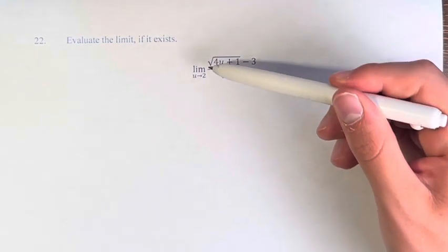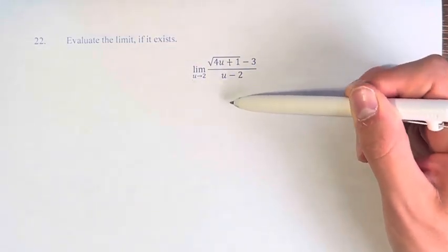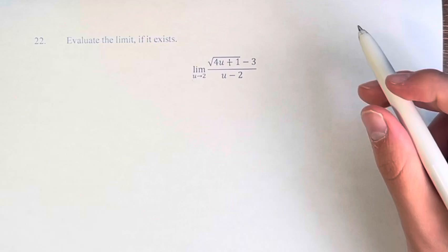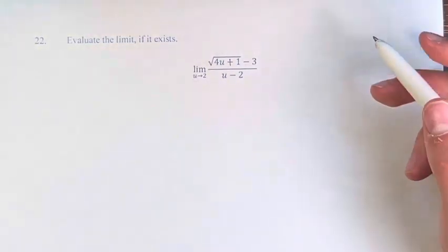So when evaluating this limit we want to just be able to plug in 2, but we can't do that because 2 minus 2 is 0 and you can't divide by 0. So what we have to do is rationalize the numerator, and that will hopefully allow us to cancel some things out in the future.